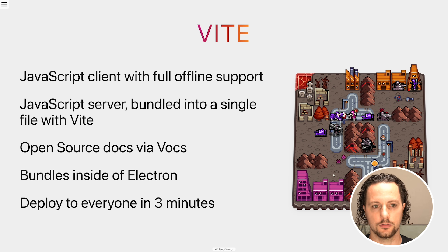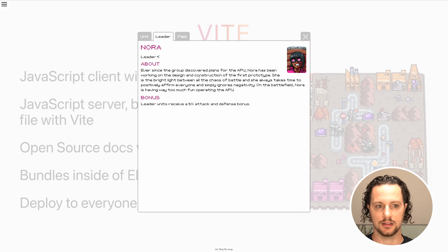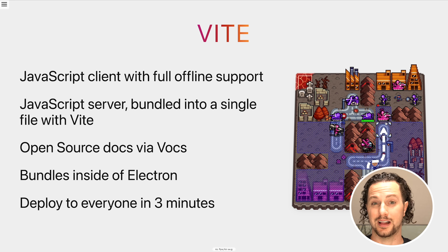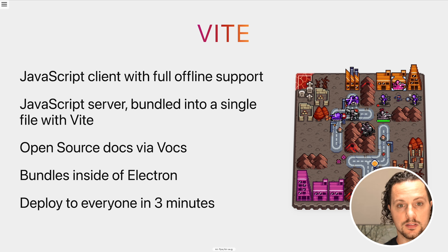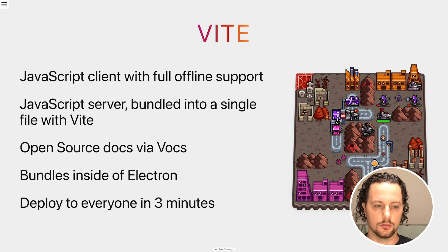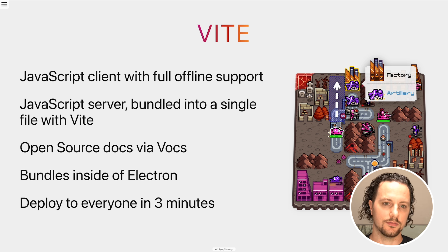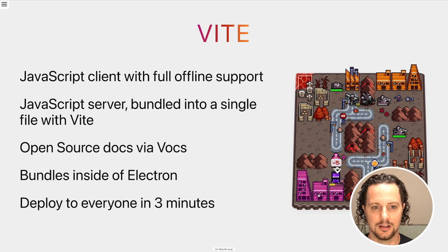I know Vite is usually used for bundling client-side code, but I found over the last few years that it works really well to bundle Node applications. It makes the entire deploy process so much simpler and makes your Docker containers much smaller because you don't have Node modules. If you just have Node or Bun or any other JavaScript engine and one file that you run with it, it's really portable. I'm using Vox, which is a Vite-based React static site generator, to provide open source documentation for Athena Crisis. And then I'm using it to bundle some files inside of Electron. The great thing about using Vite is that I can deploy this game to everyone who is playing it within three minutes — actually about 20 to 30 seconds, but it takes about two minutes to run all of the tests to make sure nothing is broken.